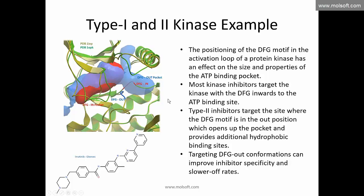Today's structure is a kinase. Kinases can be type 1 or type 2, and the positioning of the DFG motif — either 'in' or 'out' — affects the size of the pocket. If DFG is 'in' you have a smaller pocket in the ATP binding site; if DFG is 'out' you have a larger pocket, which can improve inhibitor specificity and slower off-rates. The famous Gleevec leukemia drug is a kinase inhibitor that binds to this larger pocket.